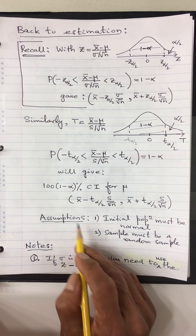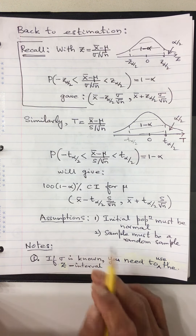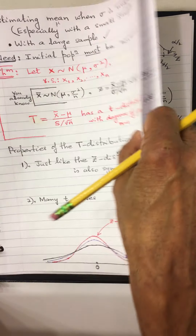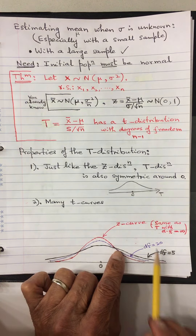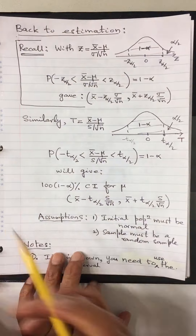Now the assumptions — these came with that theorem. What we said is that the distribution has to be normal. There was also something else: it gets closer and closer to the z for large n. So there are two assumptions: first, the initial population must be normal; otherwise the t-curve result is not correct. Second, it must be a random sample. These are the ideal conditions.